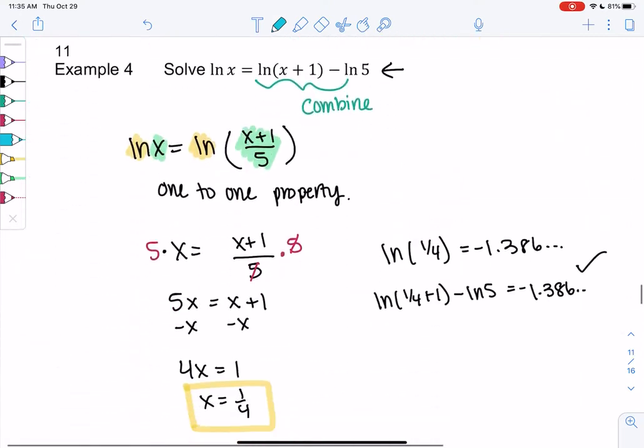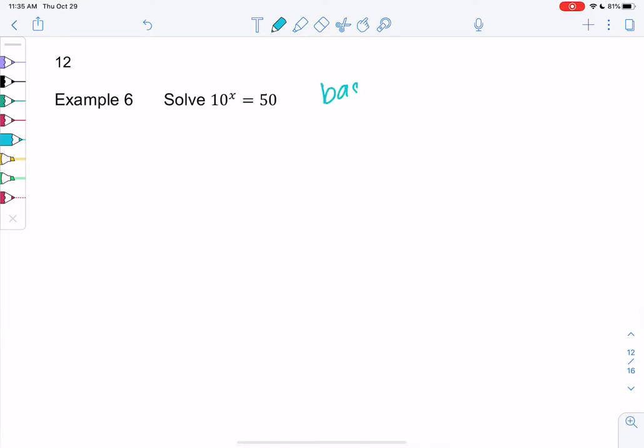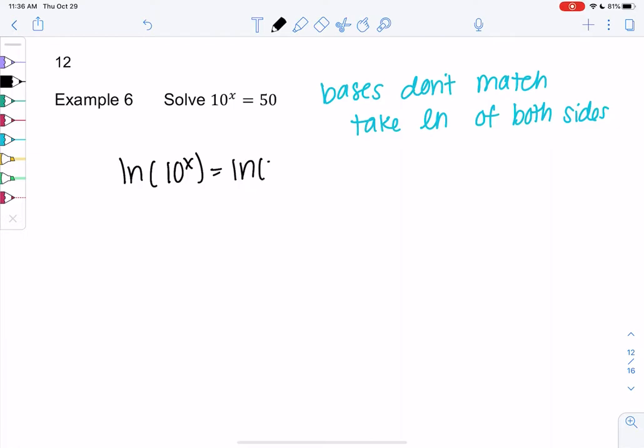So 10 to the x equals 50, the bases don't match. 50 is not a power of 10. So since the bases don't match, we'll take the log of both sides. And I like to use ln because that's a button on the calculator. So we'll go ahead and say ln of 10 to the x equals ln of 50.